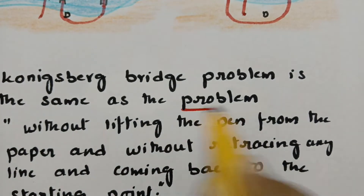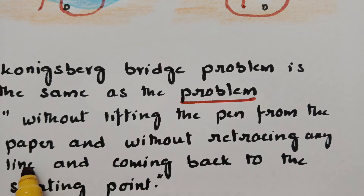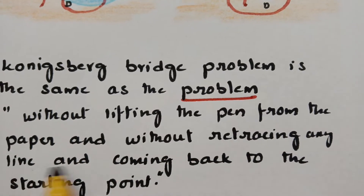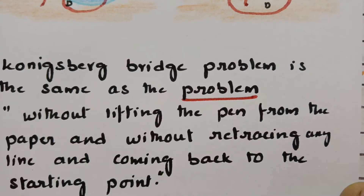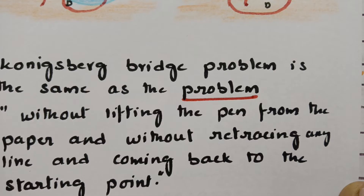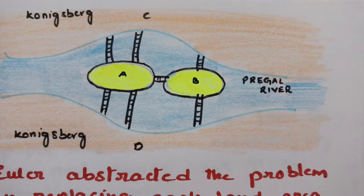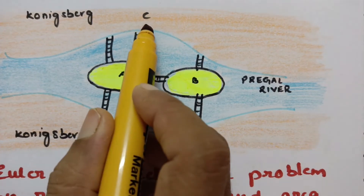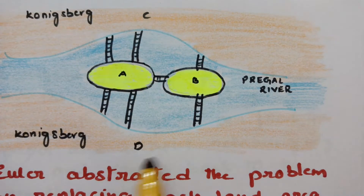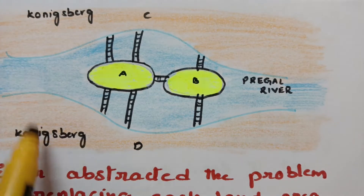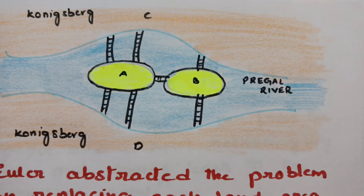This is the Königsberg Bridge Problem. In another way, it is equivalent to: without lifting the pen from the paper and without retracing any line, can you draw the figure and come back to the starting point? We have to cross all seven bridges — 1, 2, 3, 4, 5, 6, and 7 — without retracing, and return to the starting point.